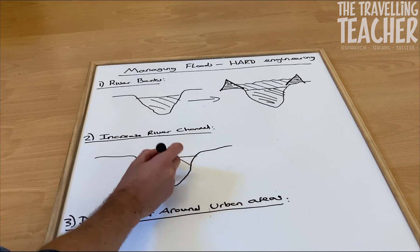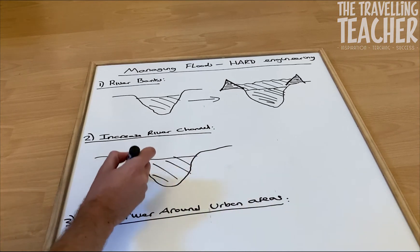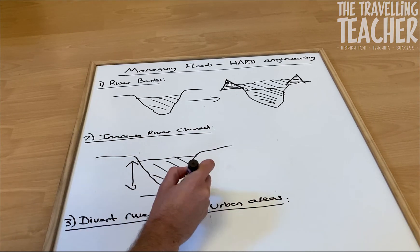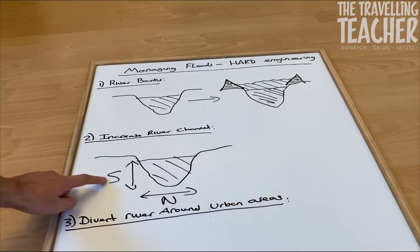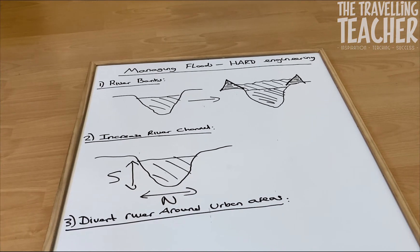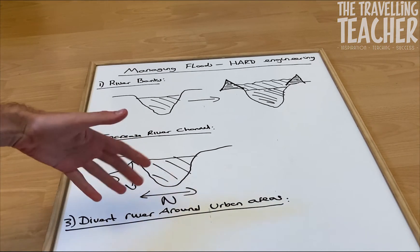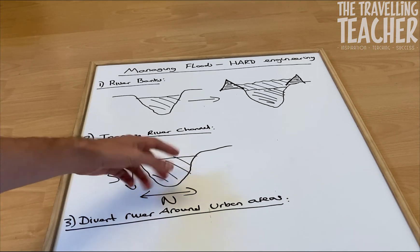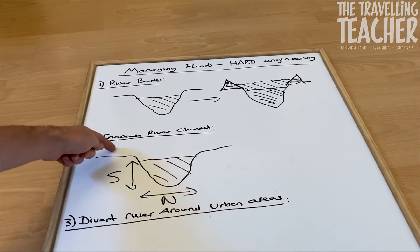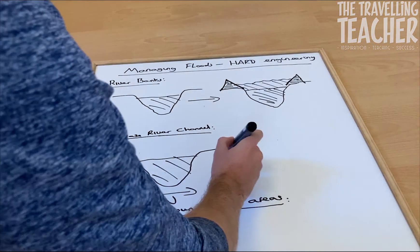Now this river channel here is all well and good, but the problem is it's very shallow and it's narrow. So S for shallow, N for narrow. And that's a problem. So of course, if there's heavy rainfall or another factor which leads to flooding, the water in this river channel is going to quite easily be able to get out onto the floodplain. So what do we do?